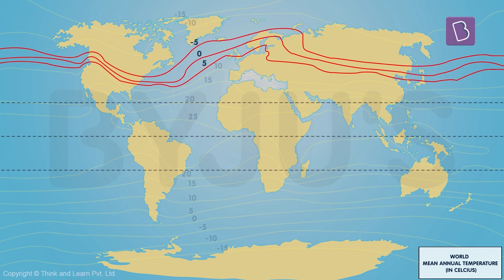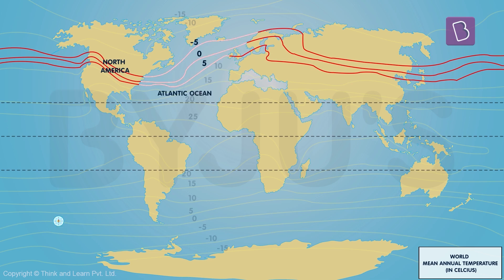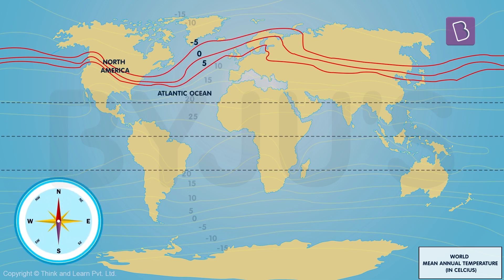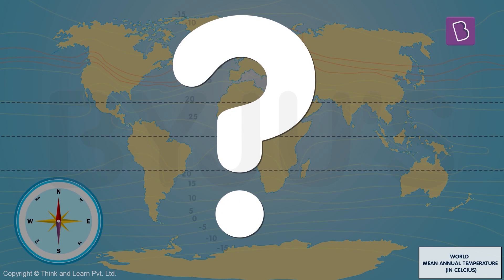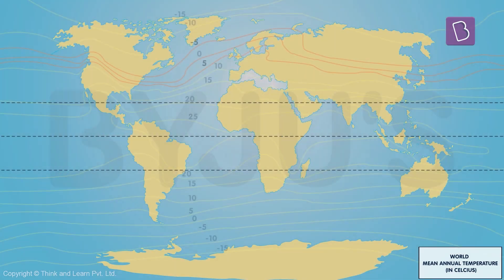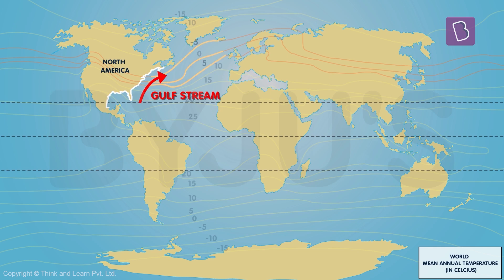Observe these isotherms as they cross North America and pass over the Atlantic Ocean — they change their direction and start moving in a north-easterly direction. This is because on the east coast of North America, the presence of a warm ocean current called the Gulf Stream increases the temperature, shifting the isotherms north-east.